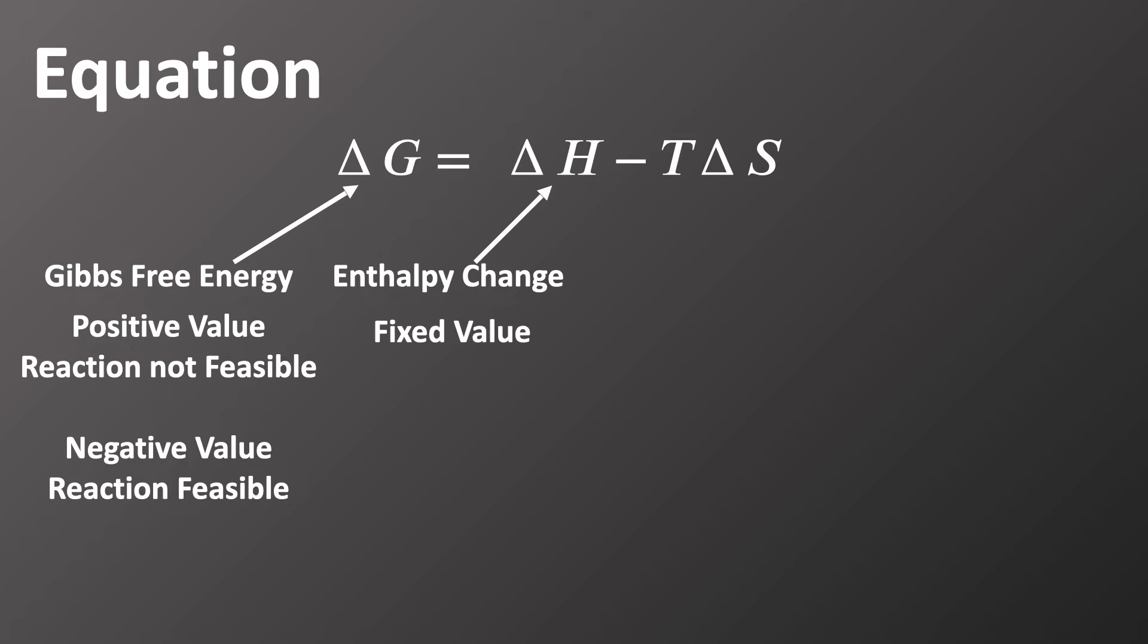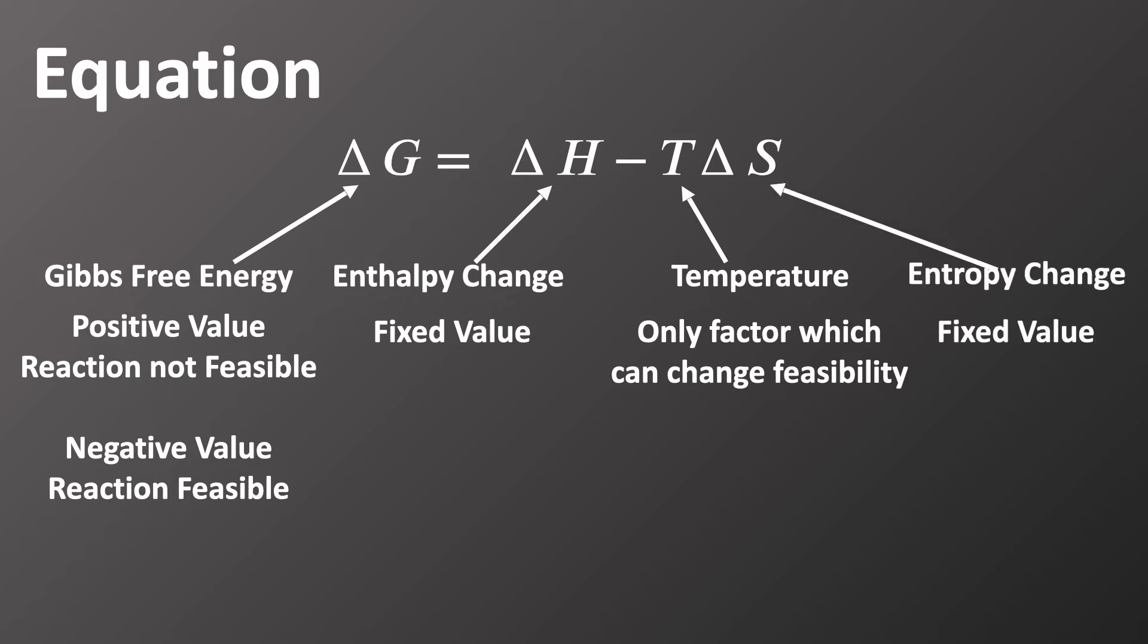Delta H is a fixed value for the chemical reaction. Temperature is the only factor which we can use to change the feasibility. And delta S is also a fixed value.